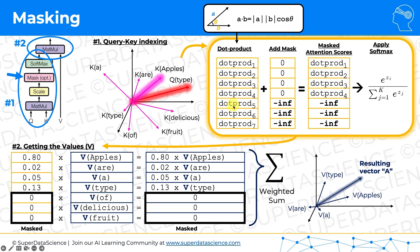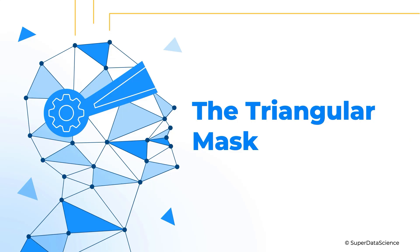This is done for every single word in the sentence, even the masked ones — but for the word 'type' specifically, being the fourth word, all following words are masked. If we were doing this for 'apples,' all others would be masked; for 'delicious,' only the last word would be masked. So whichever word you're processing, the following words are masked. The resulting context-aware vector for 'type' incorporates 'apples,' 'are,' 'a,' and their combinations based on the weights — but has no information about future words.